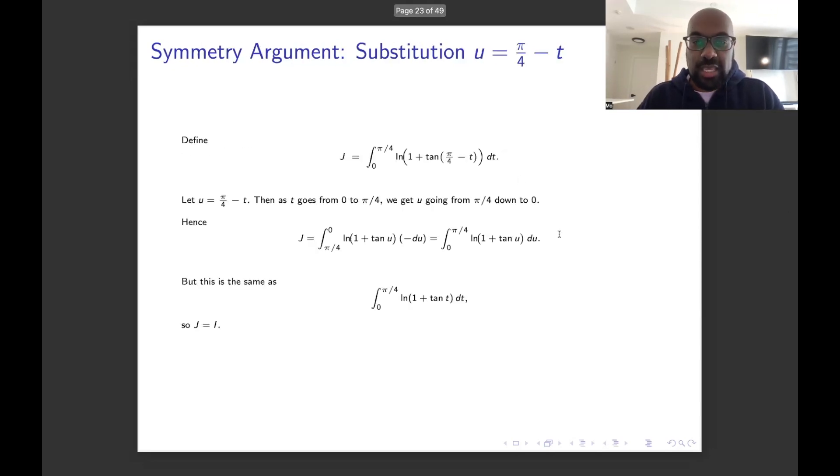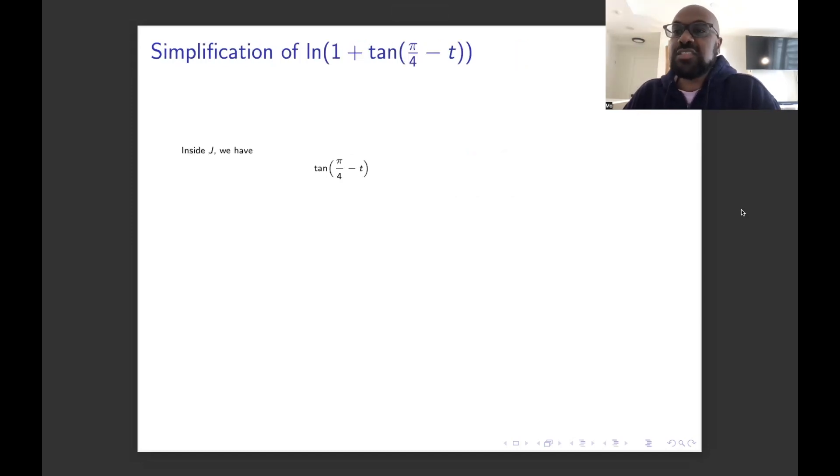Okay, so inside the integral j, we have this particular quantity here. And we can simplify this as follows using that formula we talked about. This is tan(π/4) - tan t all divided by 1 + tan(π/4) times tan t. Now we know what tan of π/4 is, it's 1. So this becomes (1 - tan t) divided by (1 + tan t).